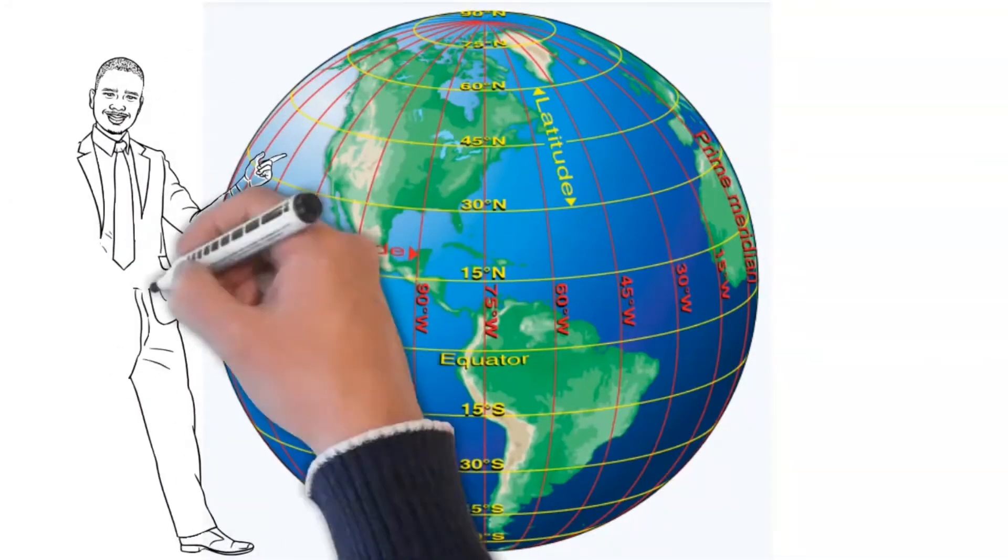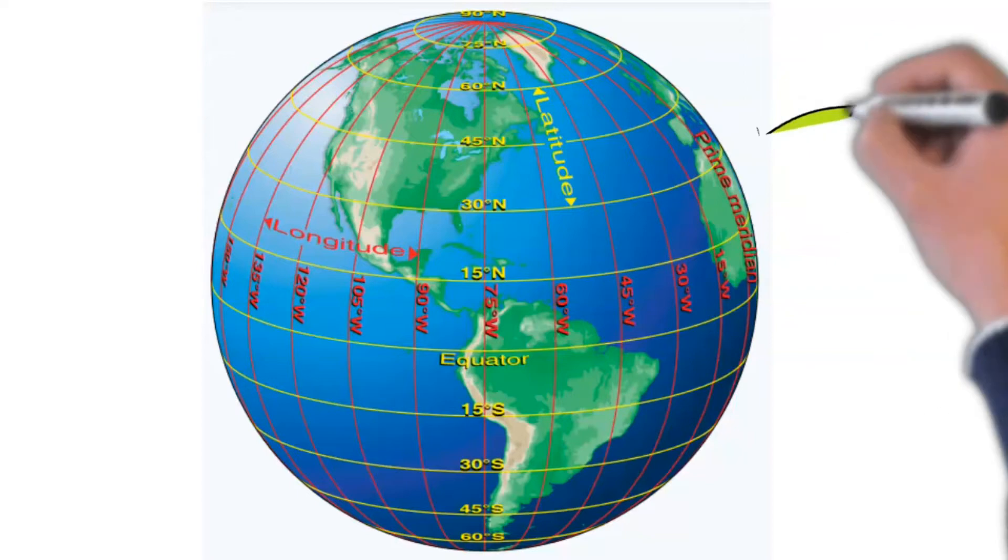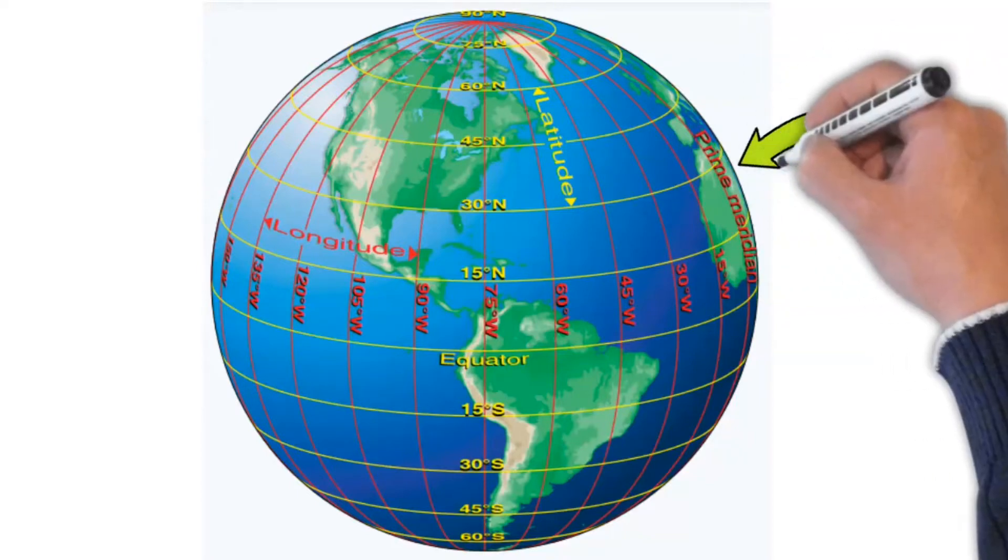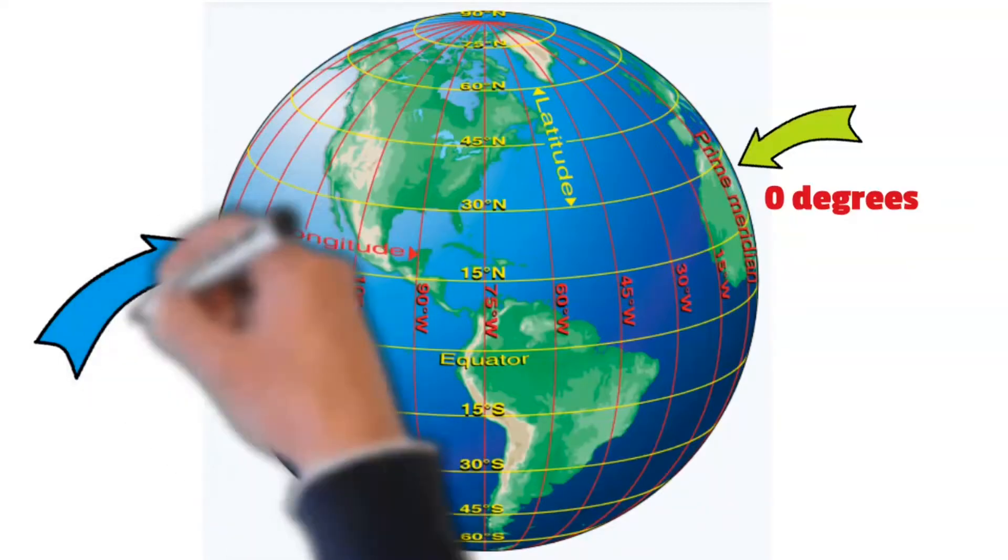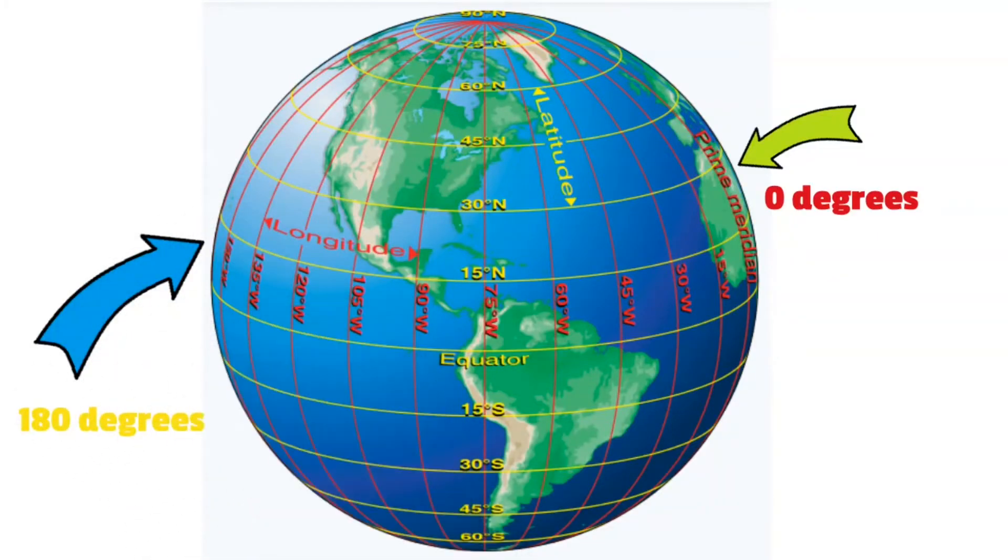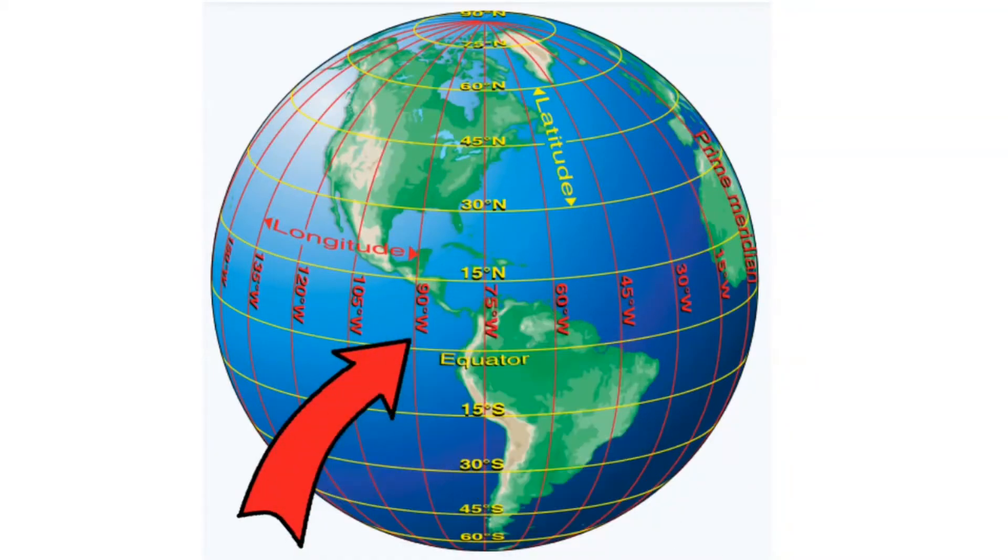Lines of longitude, which are the red ones you see here, run perpendicular to the equator. These start on the prime meridian which runs through Greenwich England at zero degrees. Then they end at 180 degrees which is roughly on the international dateline. When you travel west from the prime meridian, not only are you in the western hemisphere but you can see that these lines of longitude actually bear a westerly label and of course the opposite is also true if you travel east of the prime meridian.